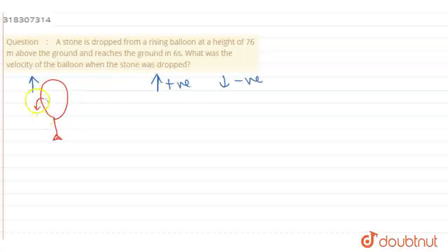Now, when the stone is dropped, the distance covered is in the downward direction. Since the distance covered is in the downward direction, we will consider that distance—the height—as negative.